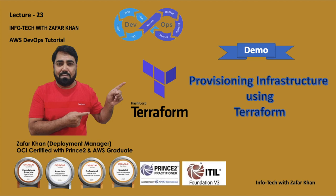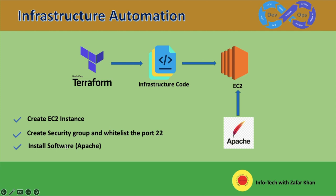We will write a code and through this code we will create an EC2 instance. We will create a security group and allow port 22 to connect with the EC2 instance and then install the software. Basically in this diagram the infrastructure code we will write and we will create the EC2 instance, and then in this instance we will install Apache. But before doing this we need to know some basic concepts of Terraform because we will write some blocks.